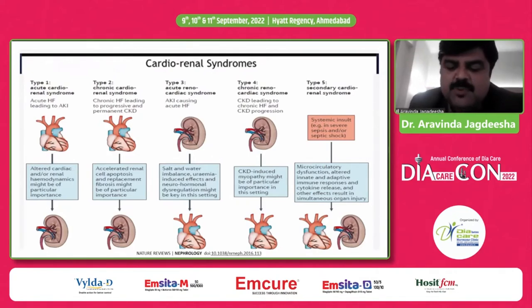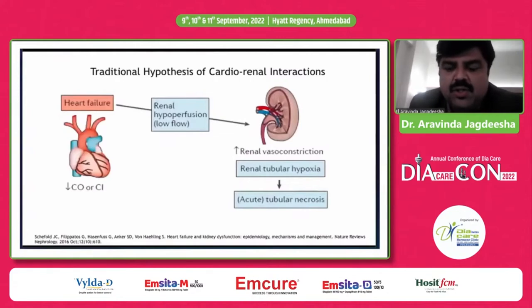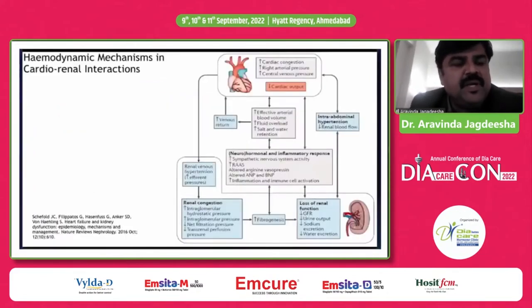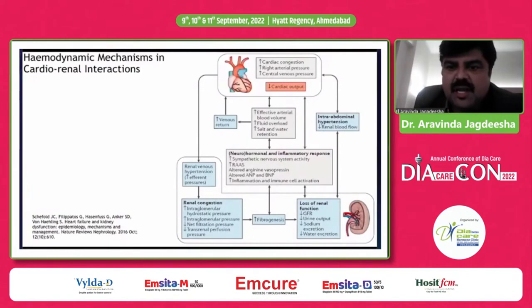The traditional hypothesis of cardiorenal interactions shows that heart failure leads to renal hypoperfusion — low flow — which leads to increased renal vasoconstriction, renal tubular hypoxia, and acute tubular necrosis. The more dynamic mechanisms include: increased cardiac congestion and right heart pressures increasing venous pressure, decreased cardiac output, increased effective arterial blood volume, fluid overload, increased salt and water retention, leading to increased sympathetic nervous system activity, increased RAAS activation, increased inflammation and immune cell activation, and increased fibrogenesis.